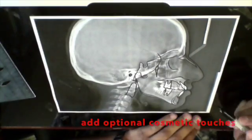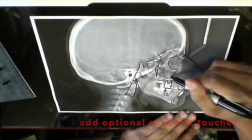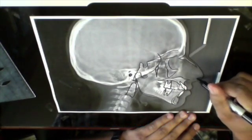You may add other optional structures to your tracing to make it look nicer, like tracing the vertebrae, zygomatic ridge, and nares.